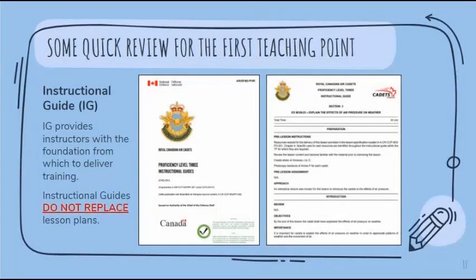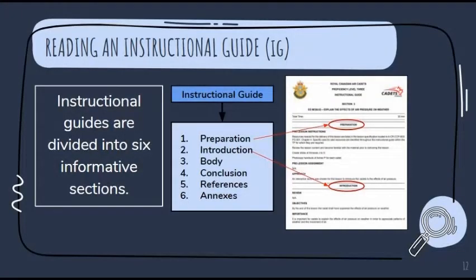Now we're moving on to reviewing exactly what an instructional guide is. The IG provides instructors with the foundation to deliver training — it will contain all of the content, any pre-lesson instructions, objectives, and importance. Importantly, instructional guides do not replace lesson plans. Instructional guides are divided into six informative sections: preparation, introduction, body, conclusion, references, and annexes. For the most part you'll only be using the main four, but there are times where you'll use sections five and six. Preparation and introduction have been circled in red to show where they are located on your IG.